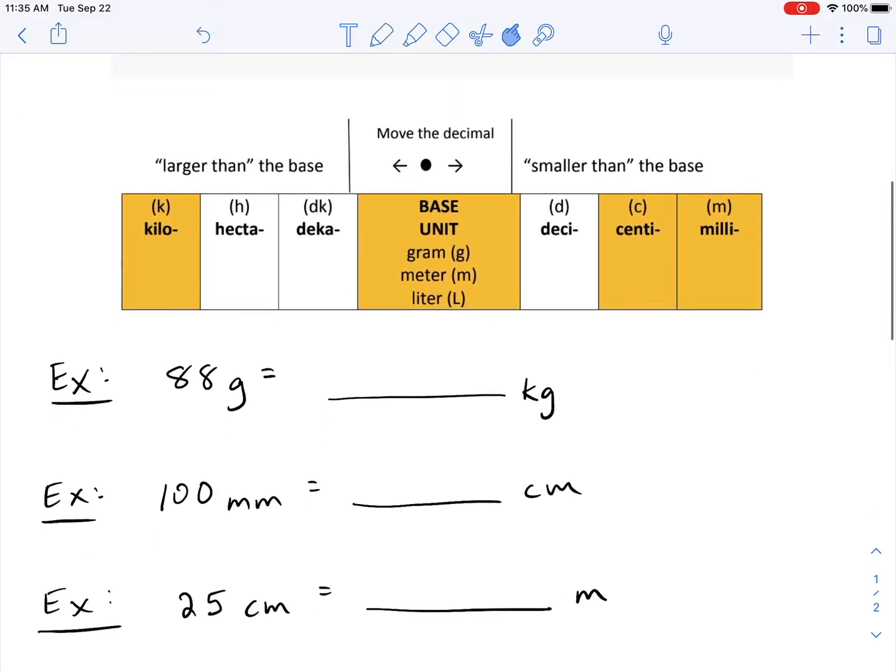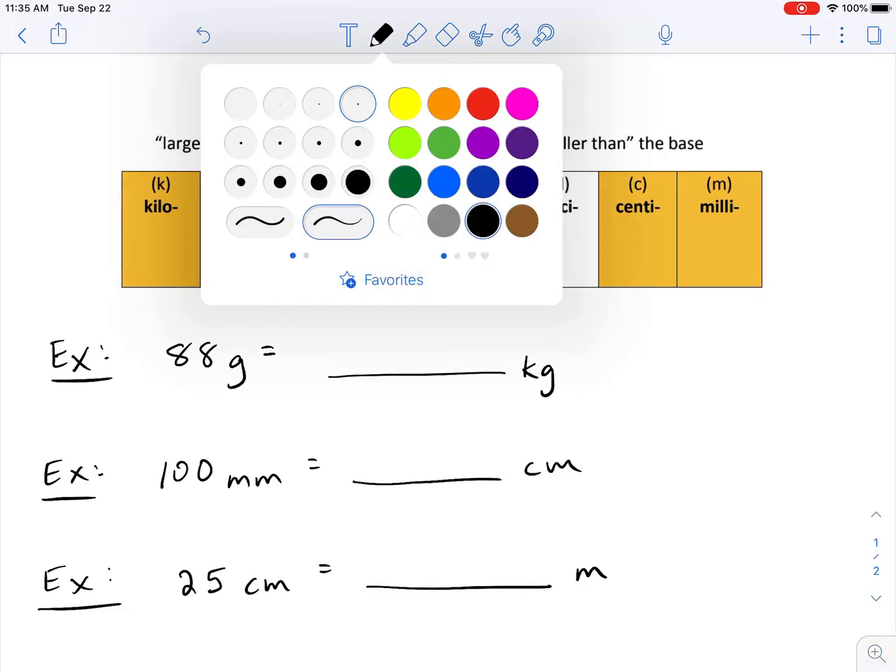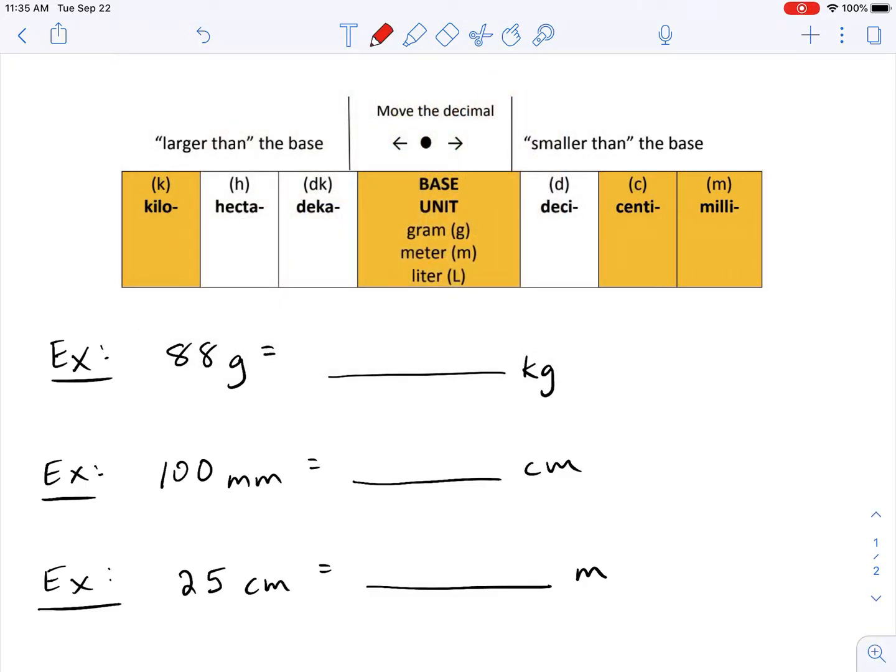All right. So let's go through some examples here and we'll show you how to use these unit conversion charts or ladders. And so what we have here at the beginning is we have 88 grams and we're trying to convert it to kilograms. That's really the biggest thing that I think you need to take a look at when doing this is what do you start with and where are you trying to get to? So in this case, we're starting with grams and we're trying to go to kilograms.